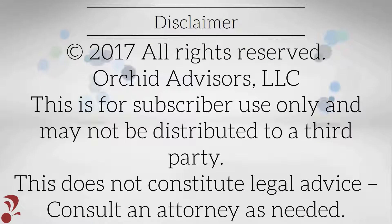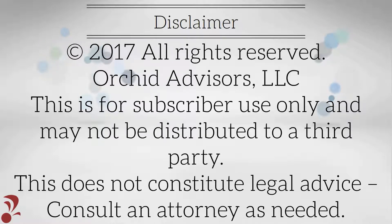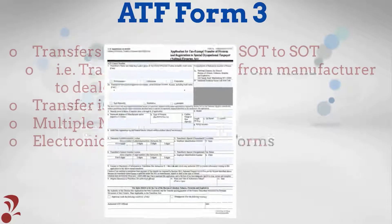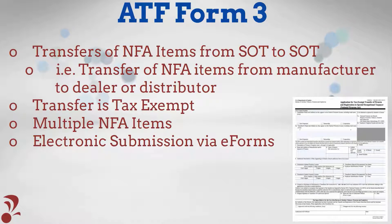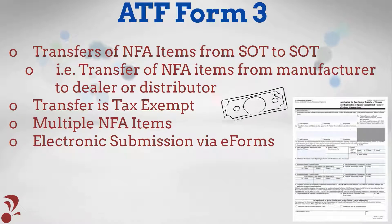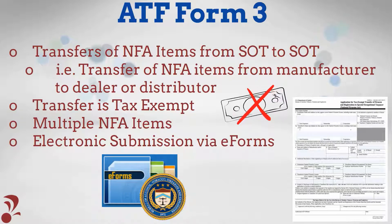We're now going to discuss how to review ATF Form 3 when receiving NFA firearms. Form 3 is utilized when NFA firearms are transferred from one SOT licensee to another, such as when a manufacturer transfers inventory to a distributor or dealer. Form 3 transfers are tax-exempt, may contain multiple NFA firearms, and may be completed via ATF's eForms portal.